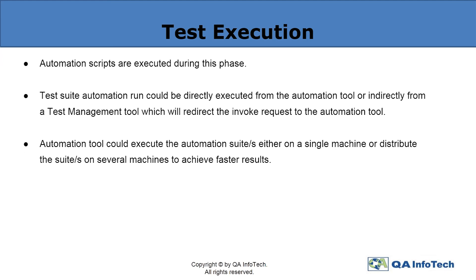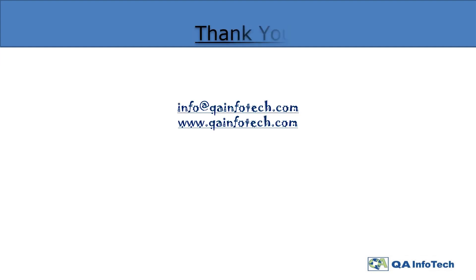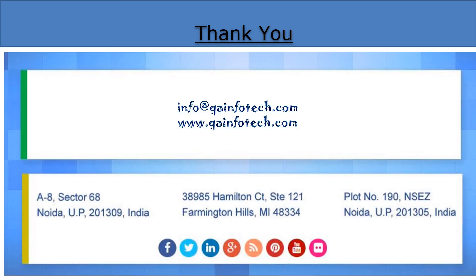Executing the automation suite can either be done on a single machine or multiple machines, with an aim of achieving faster results. Maintenance of the whole automation testing process becomes a crucial step, wherein it becomes necessary to make sure that the updated automation scripts required for every release cycle remain stable. We hope that you have learned a little something on automation testing and its key process. To keep on exploring, log on to our website www.qinfotech.com.